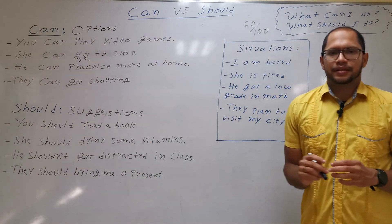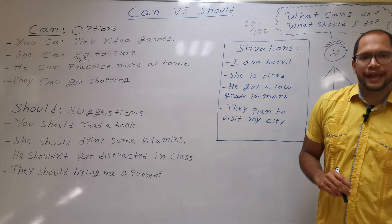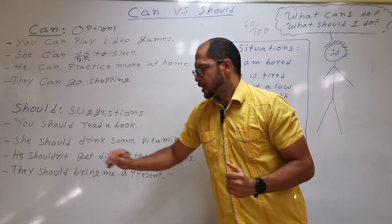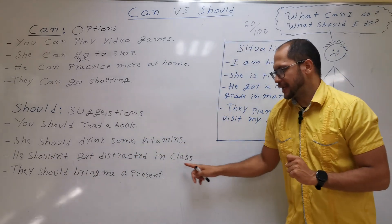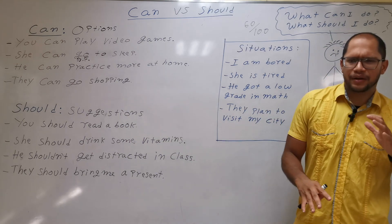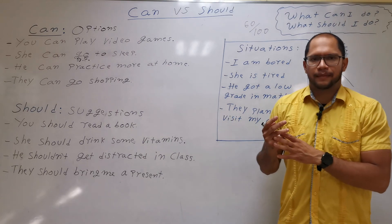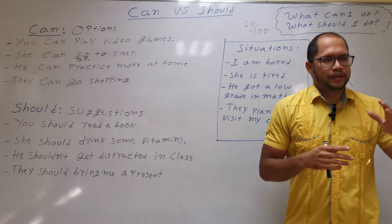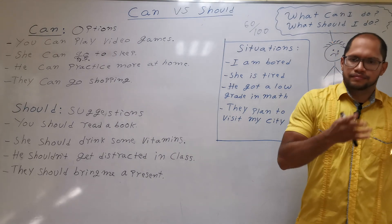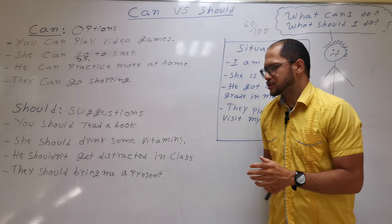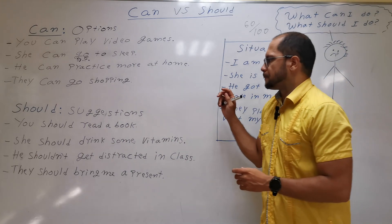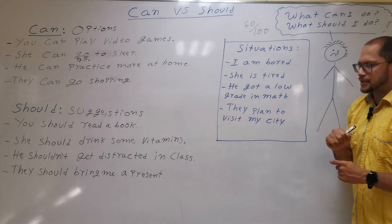I would also use SHOULDN'T — the negative form of SHOULD — because you can use it negatively. Shouldn't means 'should not.' He shouldn't get distracted in class. Sometimes we're with our friends, a little tired, we start talking, and we don't pay attention to what the teacher is explaining. So he shouldn't get distracted in class — he should focus more.